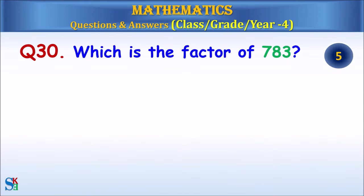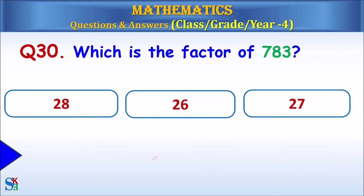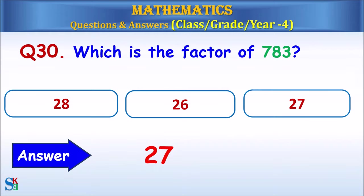Question 30: Which is the factor of 783? The answer is 27.